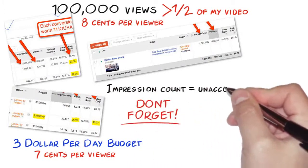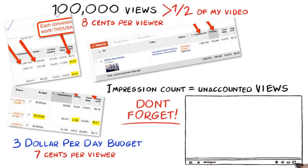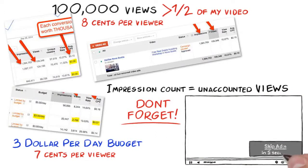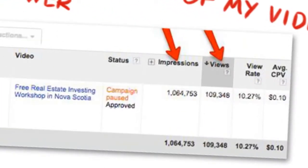Impression count is also very important, as these are unaccounted views — unaccounted views for the first 5 seconds where the user can skip, or a little less than half of the video before they can skip the ad. These are forced views which are unaccounted. As you can see from this screenshot, it has over 100,000 paid views.